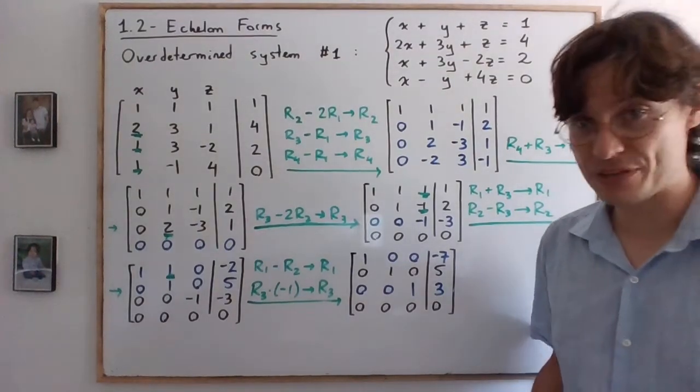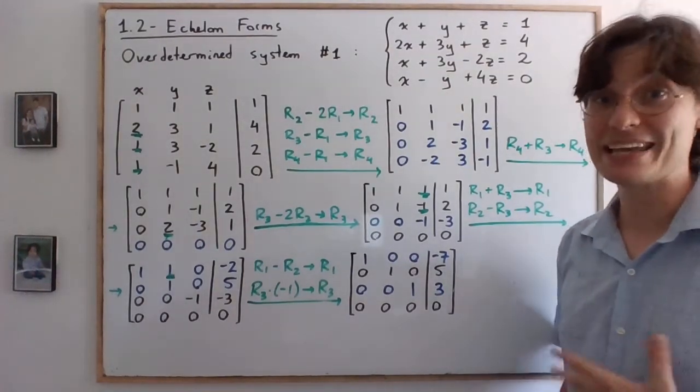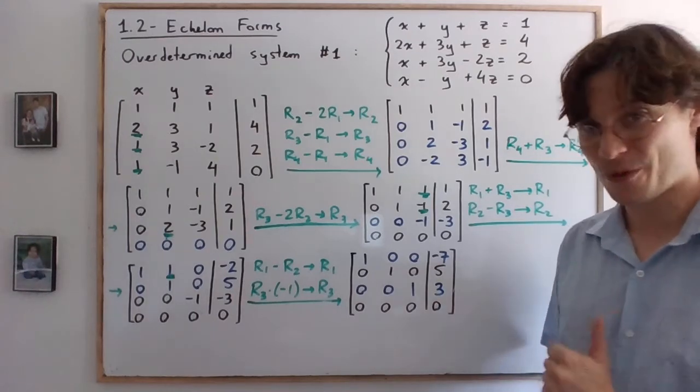Compare this with the reduced row echelon form that I gave in the notes. This is it. So we're good.